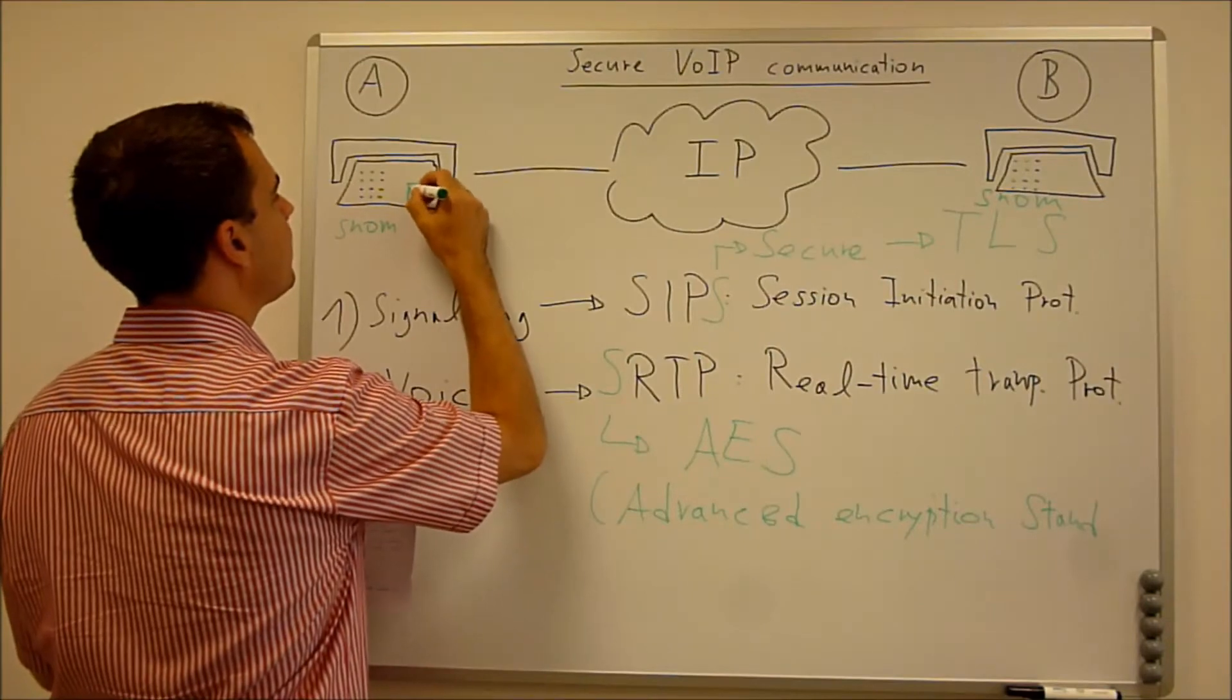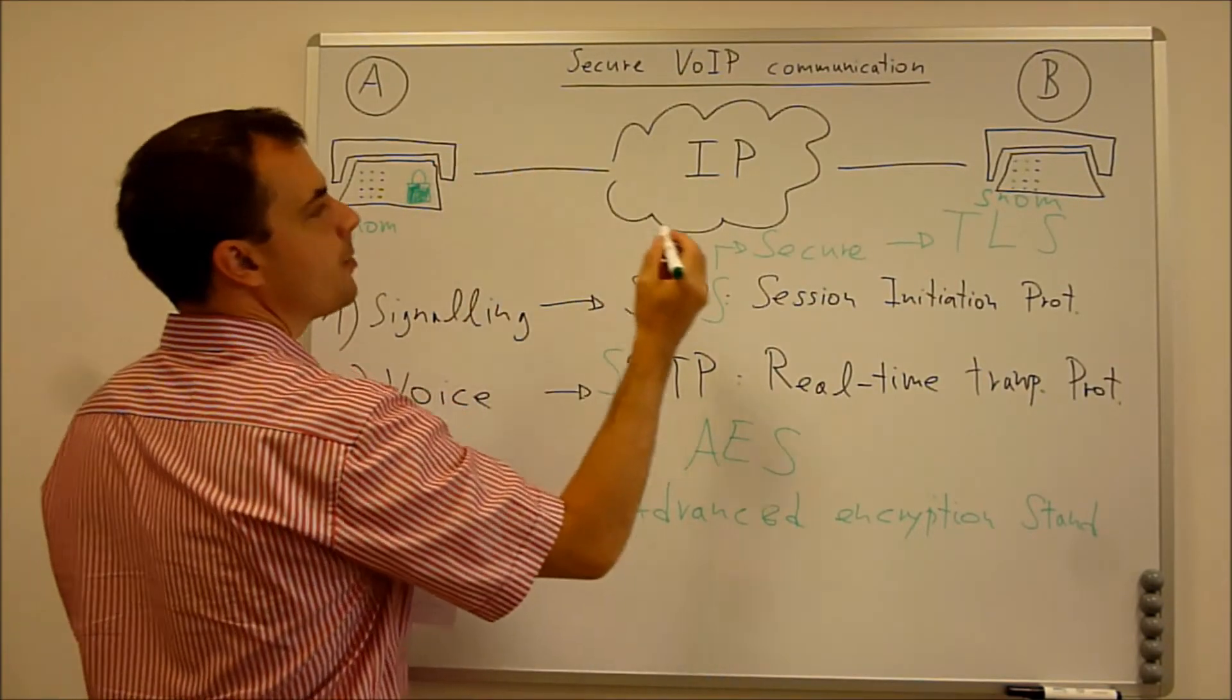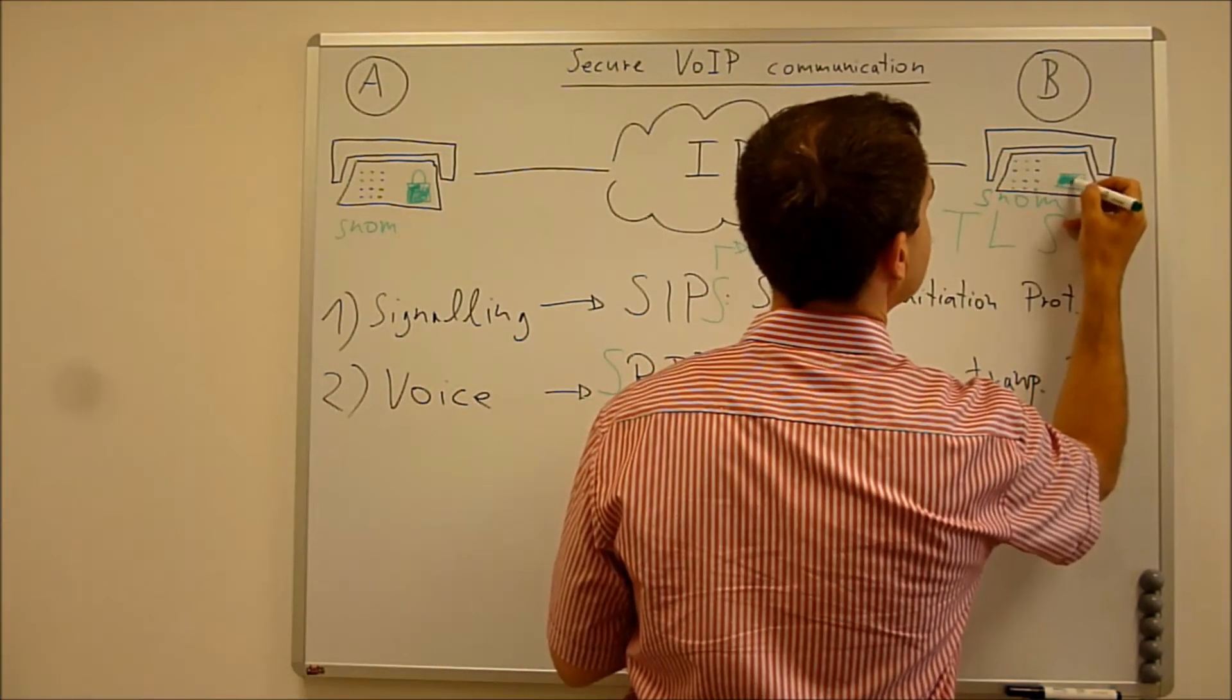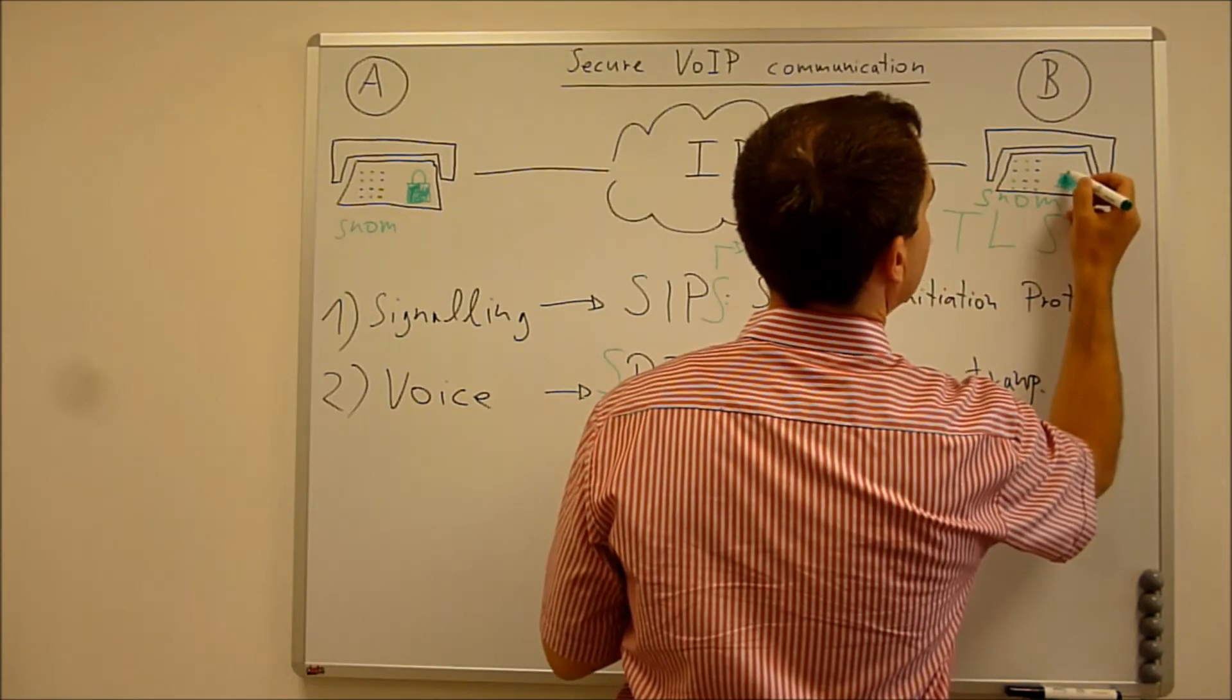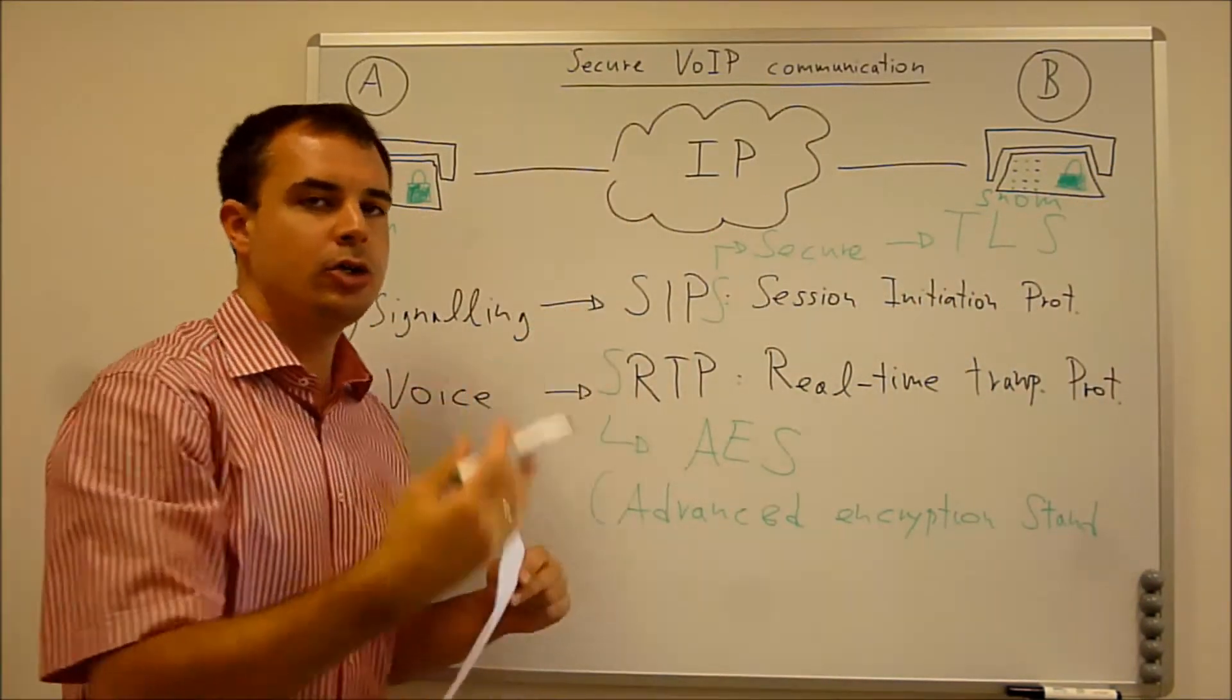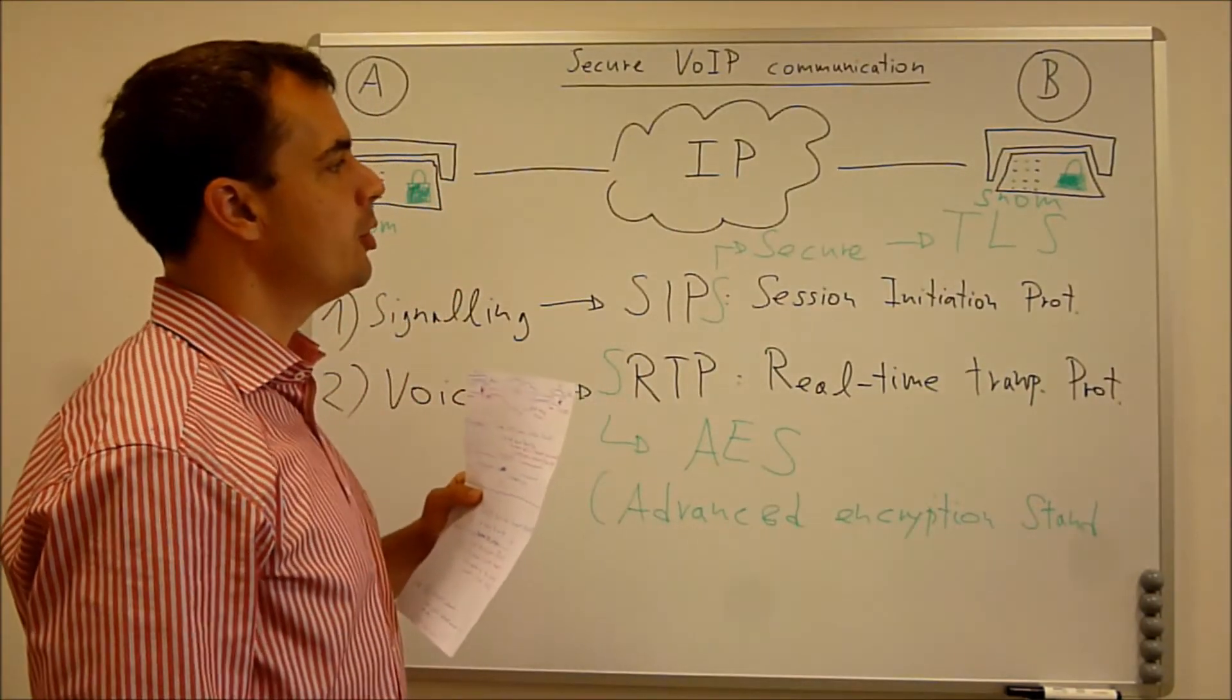either TLS in the signaling for SIPS and AES for the SRTP for the voice, then those phones, they will show the lock on the screen. So there is a lock sign. And only when both items for the signaling and for the voice are fulfilled,